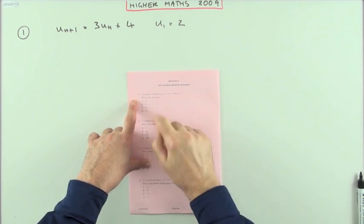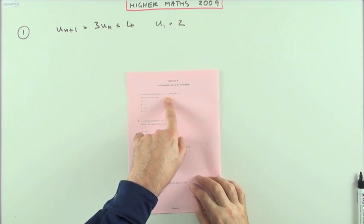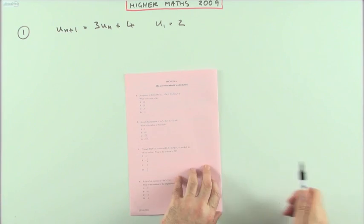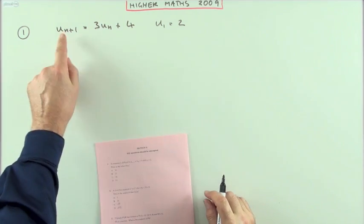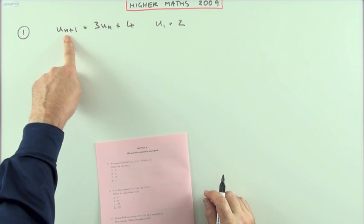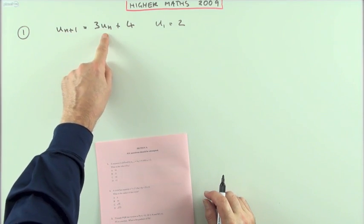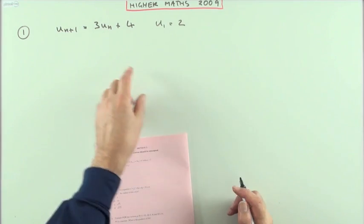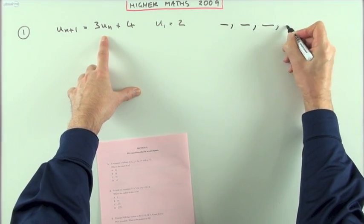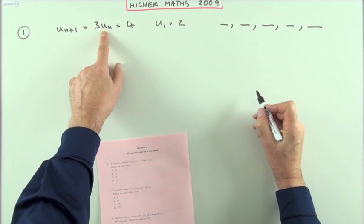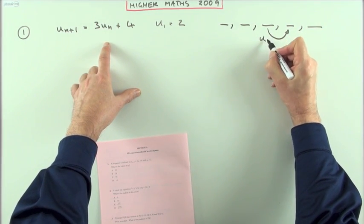The first of the multiple choice from the 2009 Higher: a recurrence relation. That should be straightforward enough. A recurrence relation means to work out the value of any particular term, you need to know the term before it. It doesn't tell you how to work out any term at any great distance — it simply says if you have a sequence of numbers, this formula will tell you how to get from one number to the next.